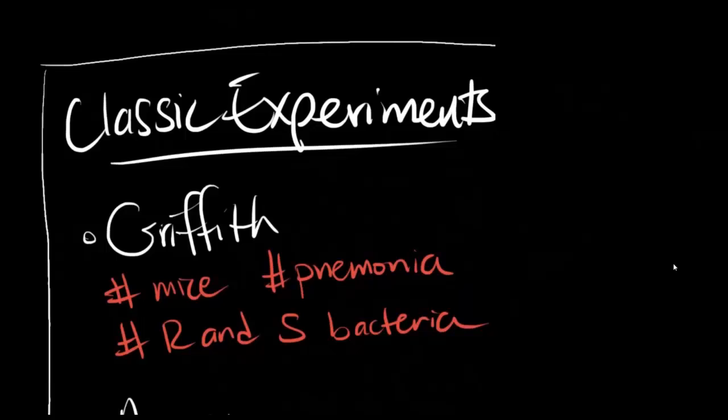Now I'd like to talk briefly about three classic experiments. The first is Griffith's experiment. He observed that R cells from a bacteria called Pneumococcus didn't kill mice, while S cells did. Eventually, he discovered that if he combined dead S cells with living R cells, the R cells ended up killing the mice, leading him to reveal the fact that genetic material could be transferred from one organism to another.